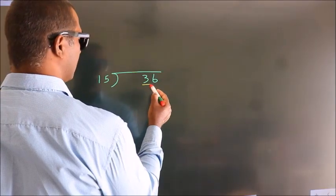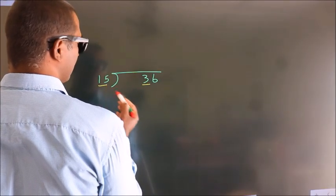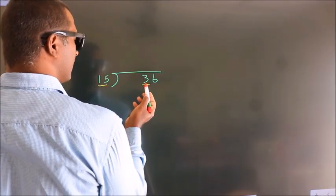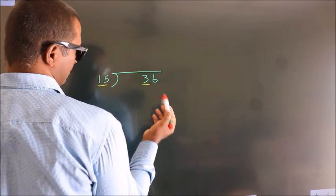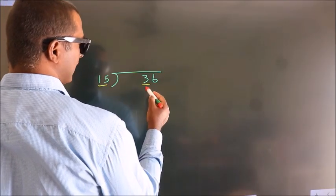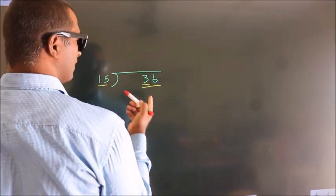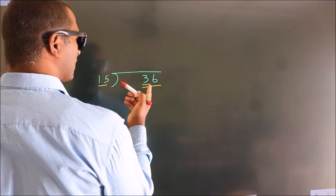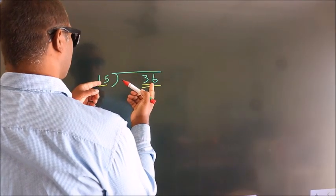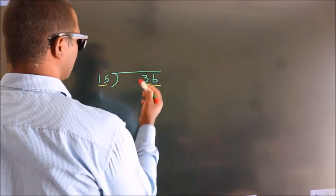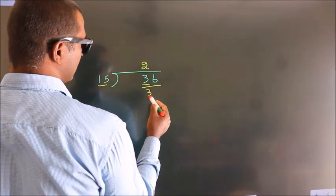Here we have 3 and here 15. 3 is smaller than 15, so we should take 2 numbers: 36. A number close to 36 in the 15 times table is 15 times 2, which is 30.